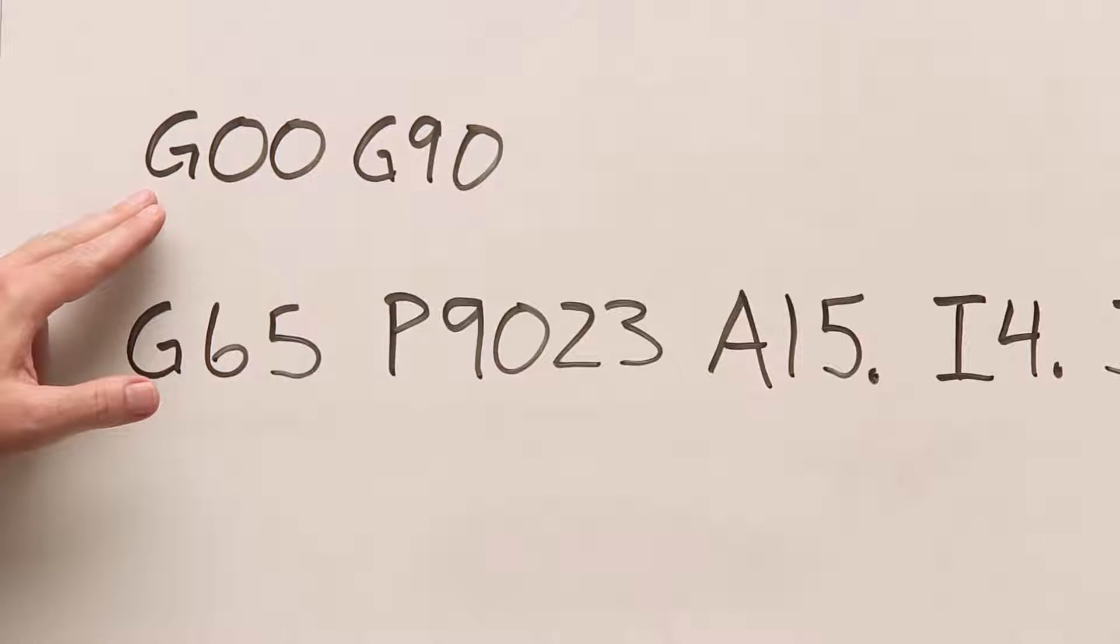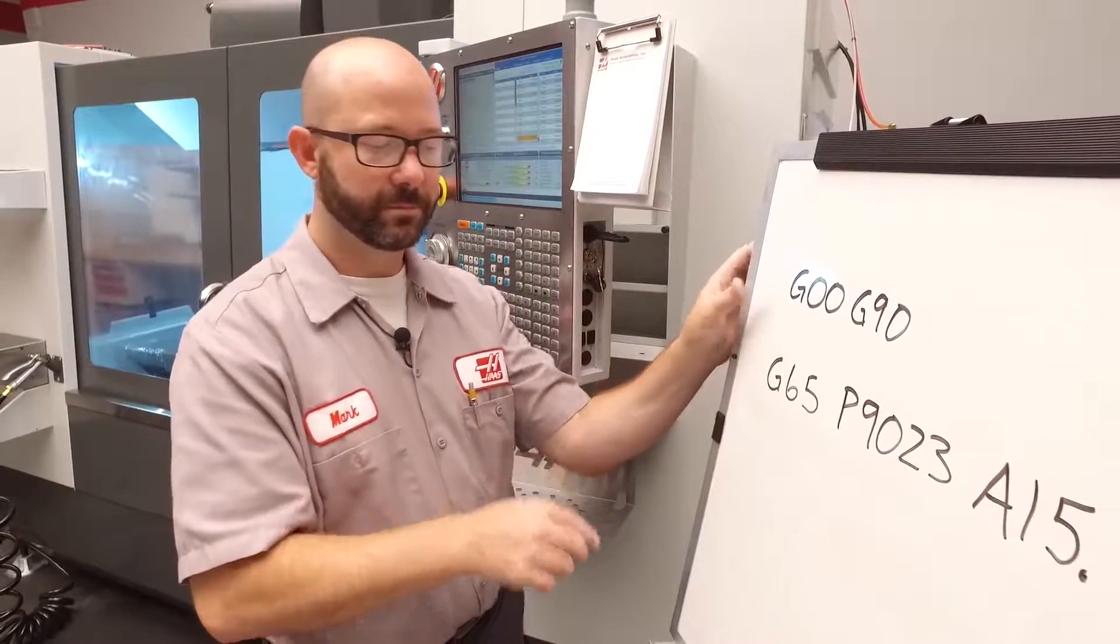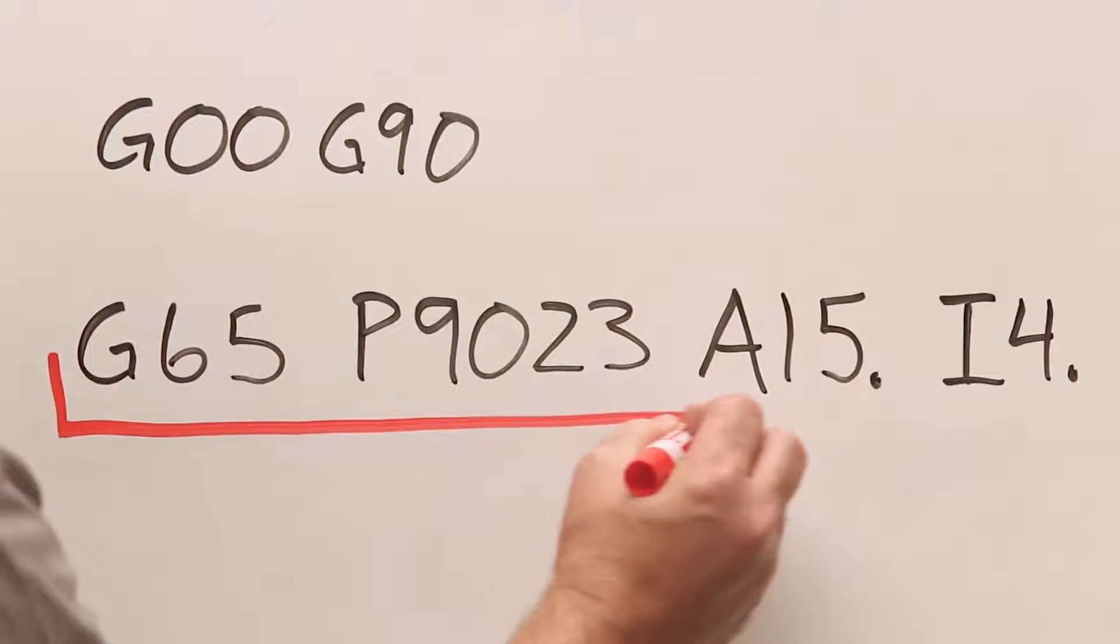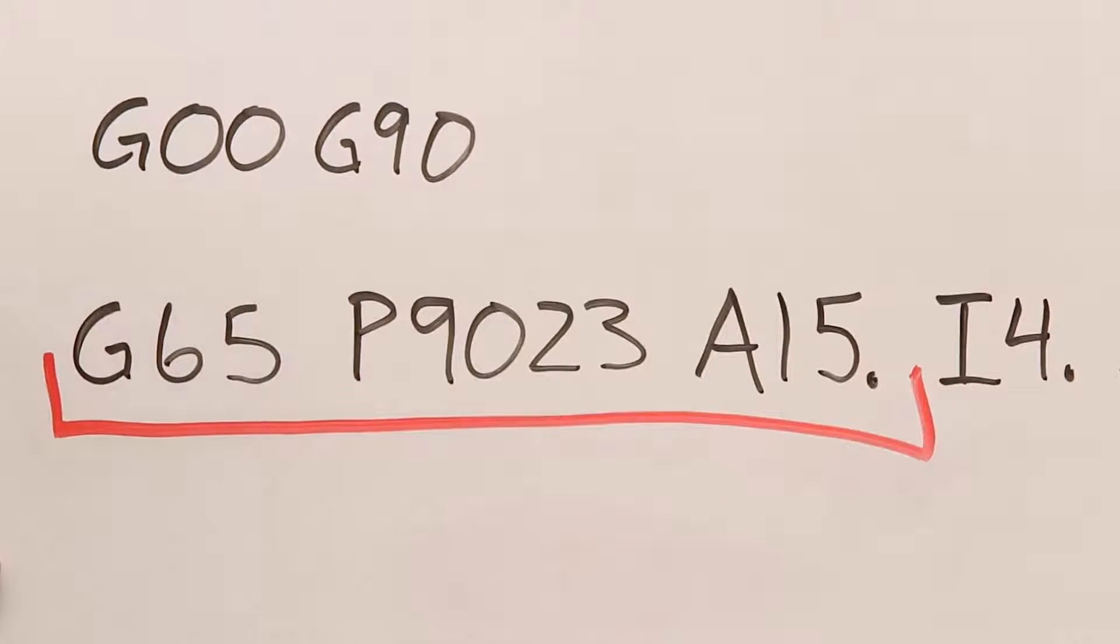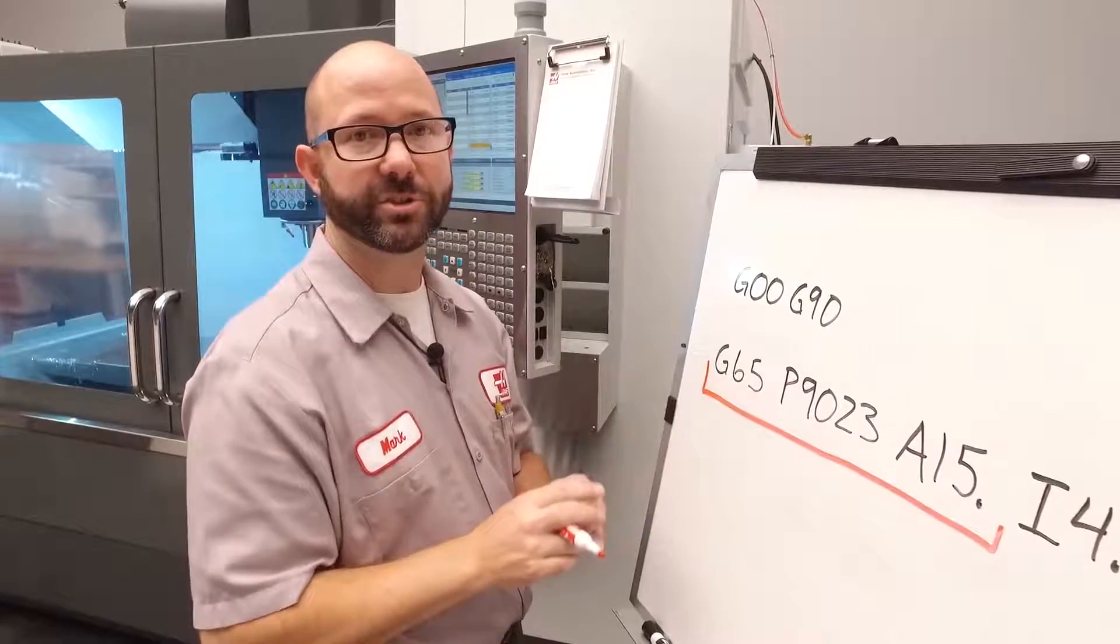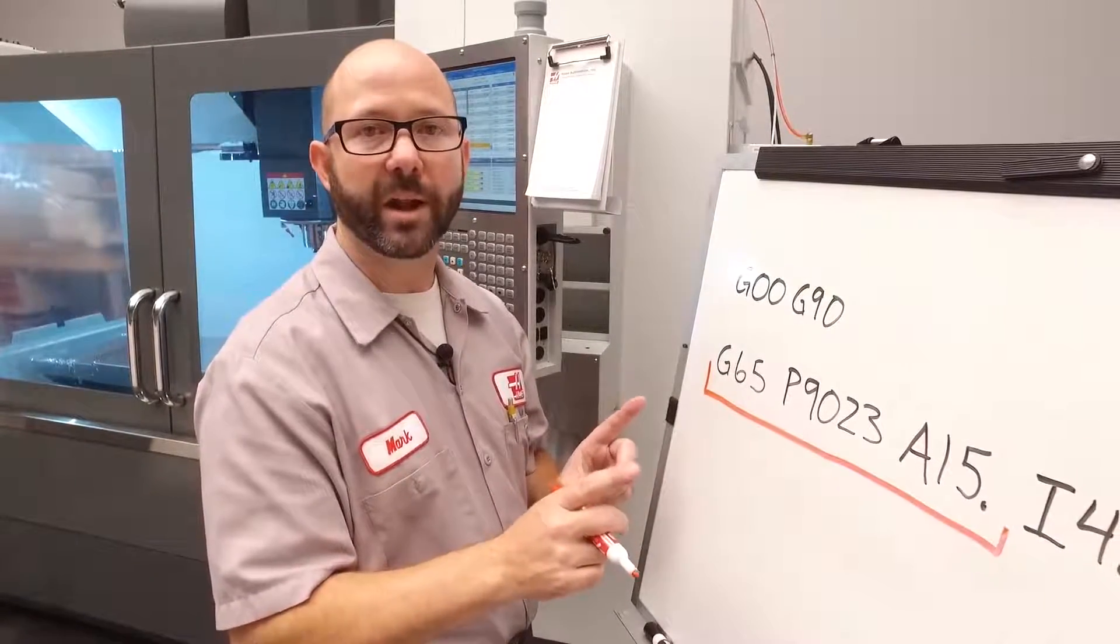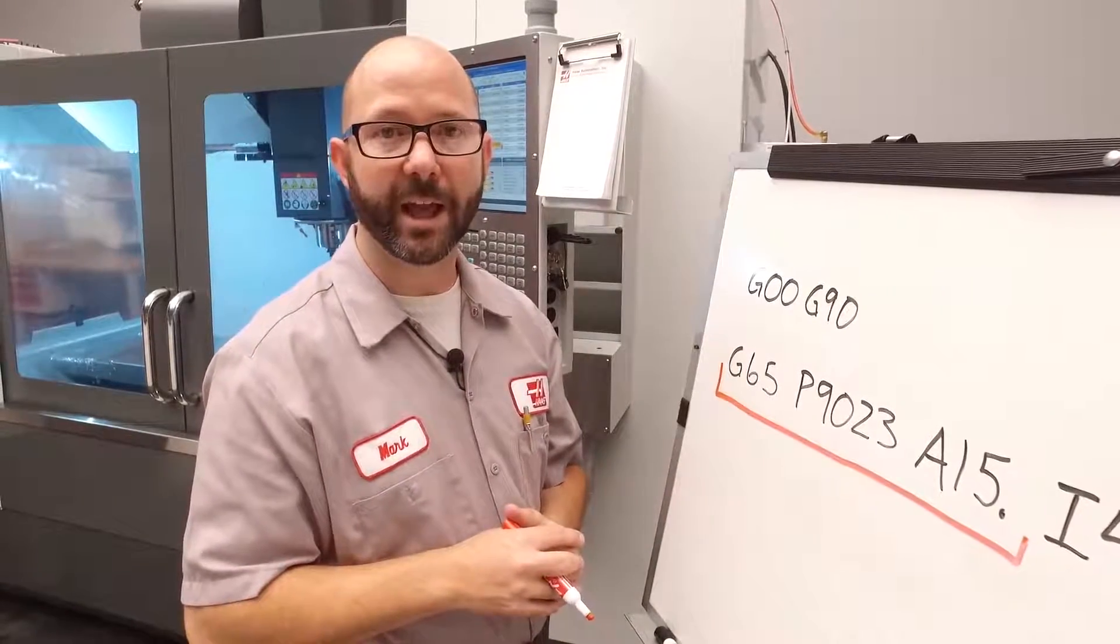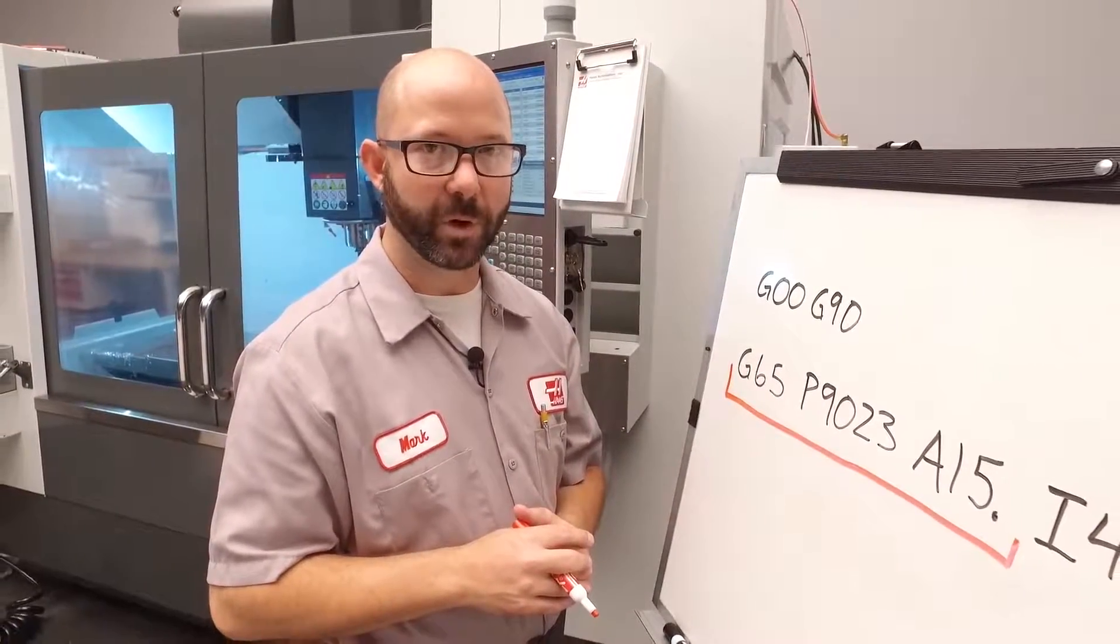We're gonna start with G0, G90. That's just a safe start-up line. We're gonna follow that up with a G65, P9023, A15. You're gonna enter that just as you see it on your screen. This is gonna call up the correct macro to find that corner and write to variables 189 and 192 with those angles that we're looking for.